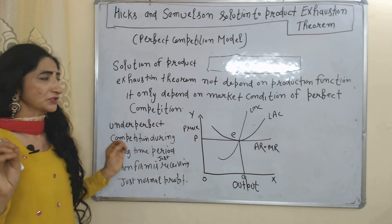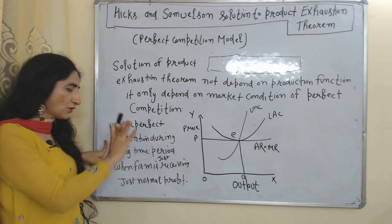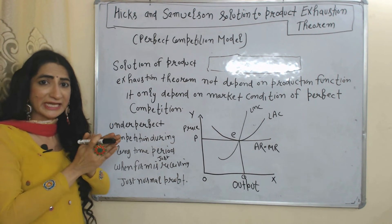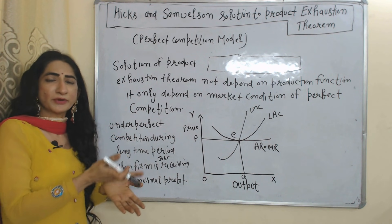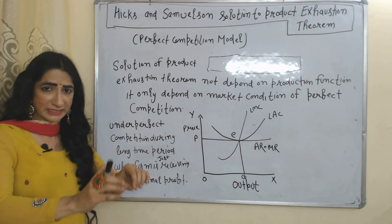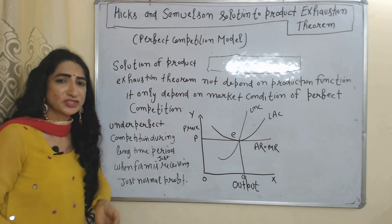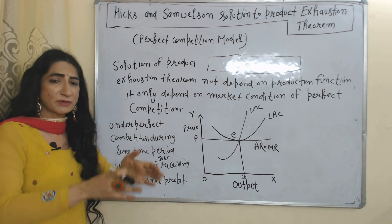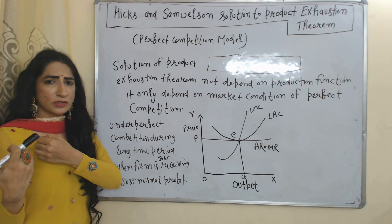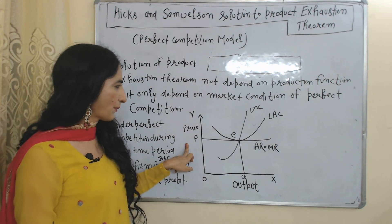According to Hicks and Samuelson, the solution to the Product Exhaustion Theorem does not depend on any production function. It mainly depends on the market condition of perfect competition. Under perfect competition, during the long run, when a firm is just receiving normal profit, it is possible that the Adding-Up Problem arises — meaning all factors of production are paid just equal to their marginal product and total product is exhausted.